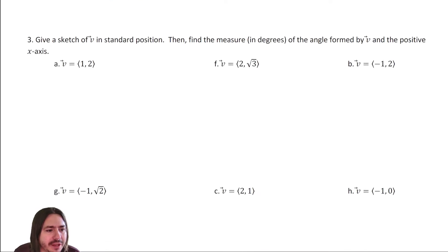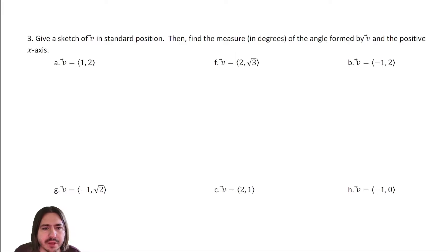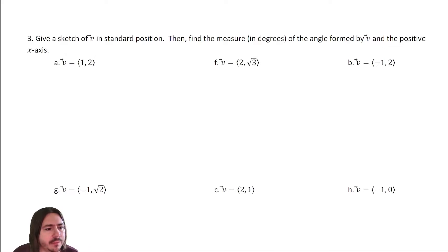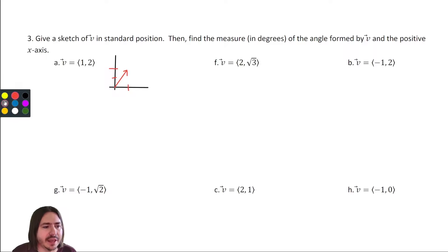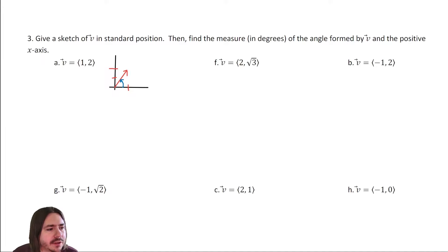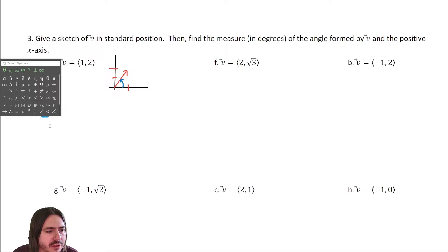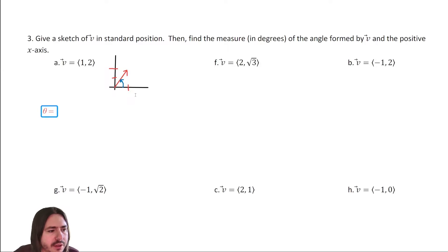Number three: give a sketch of the vector in standard position and find the direction angle — the angle formed by the vector and the positive x-axis. Vector V in part A is one comma two, which is in the first quadrant. The reference angle equals the direction angle in quadrant one. We want this angle theta, which equals the inverse tangent of y over x, which is two over one.